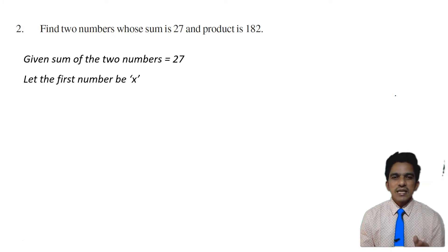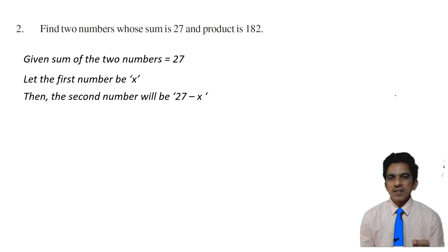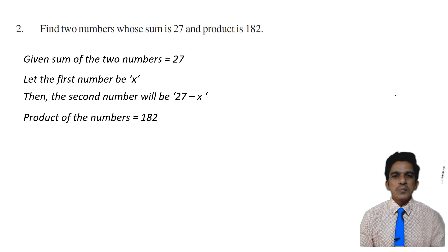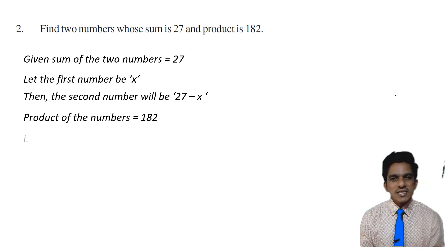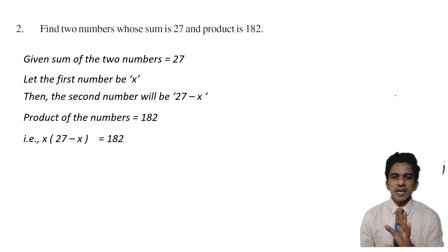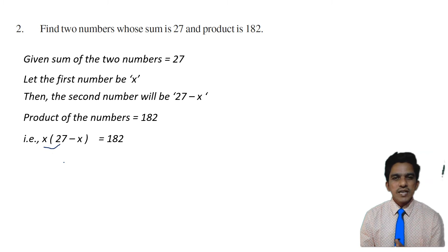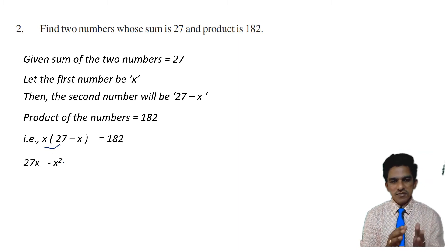Consider the first number to be x. Then the second number will be 27 minus x. We are given the product of the two numbers is 182. So when you multiply x and 27 minus x, you get 182. Expanding: x into 27 is 27x, minus x into x is x squared. So on the left side we have 27x minus x squared.